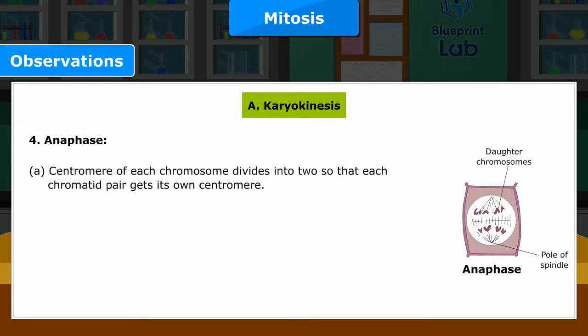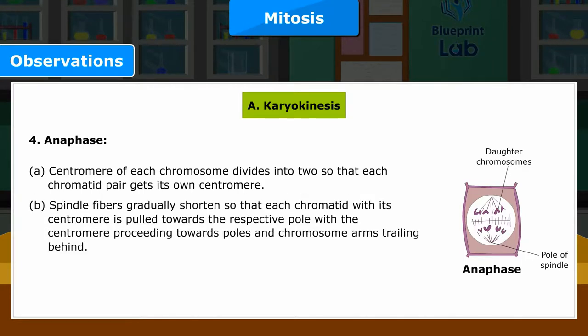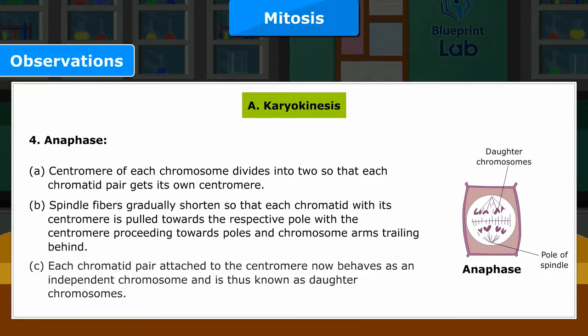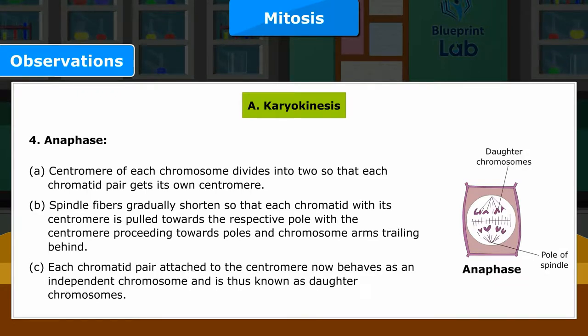4. Anaphase: A. Centromere of each chromosome divides into two so that each chromatid pair gets its own centromere. B. Spindle fibers gradually shorten so that each chromatid with its centromere is pulled towards the respective pole, with the centromere proceeding towards the poles and chromosome arms trailing behind. C. Each chromatid pair attached to the centromere now behaves as an independent chromosome and is thus known as daughter chromosomes.